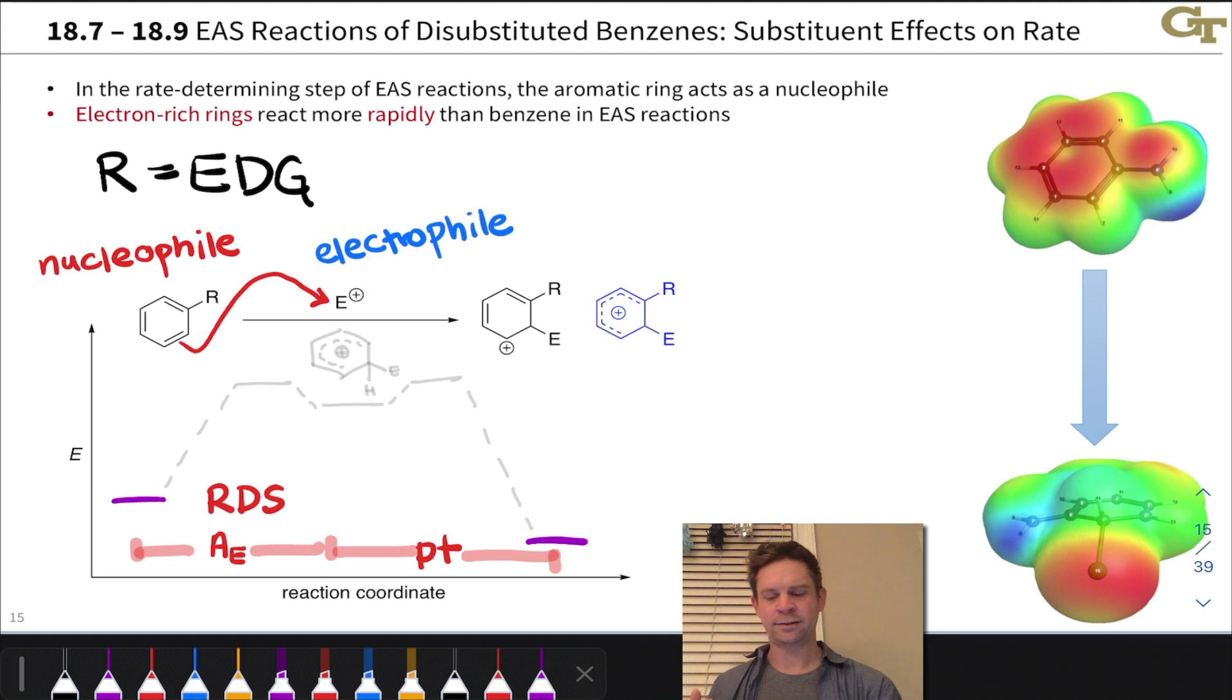Now we want to ask about the relative reactivity of our electron-rich benzene relative to benzene itself. What I've done actually over here is drawn those curved arrows on this electrostatic potential map for an electron-rich benzene. This is an electron-donating group. We can tell because of the high electron density inside the ring, and what happens here is donation of that electron density to E+ in the key rate-determining A sub E step.